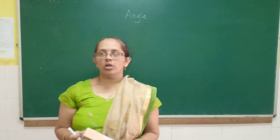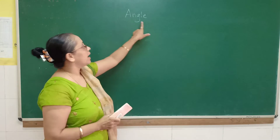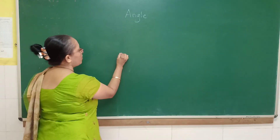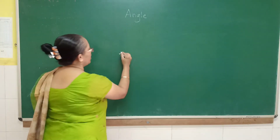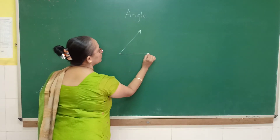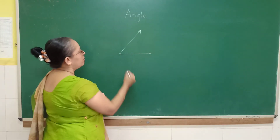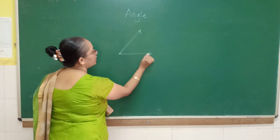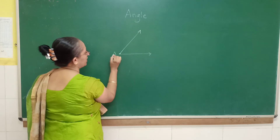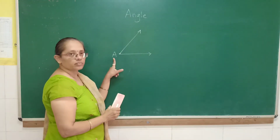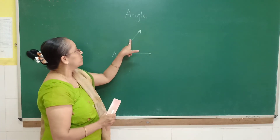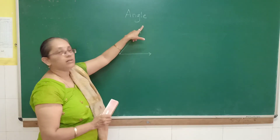Hello students. Today we will learn the concept of angle. Now let's see what is an angle. We have a common starting point and two arrows going in different directions. We call them rays — one ray and a second ray which has a common starting point. So when two rays start from a common point, it forms an angle.